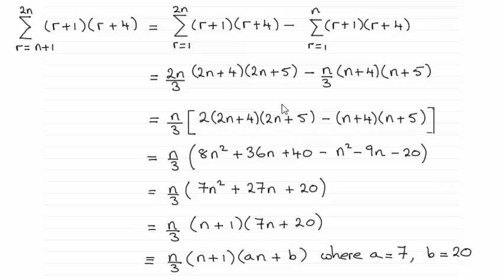So expanding this term gives me 8n² + 36n + 40, and then minus one times this expression expanded gives me -n² - 9n - 20.